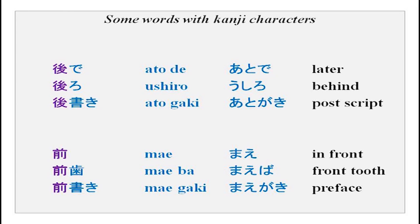A few new words with these kanji characters: atode, ushiro, atogaki means a postscript; mae means front or ahead; maeba is front teeth (ba means tooth); maegaki or maekaki is a preface. These are new words with the characters you can learn and practice.